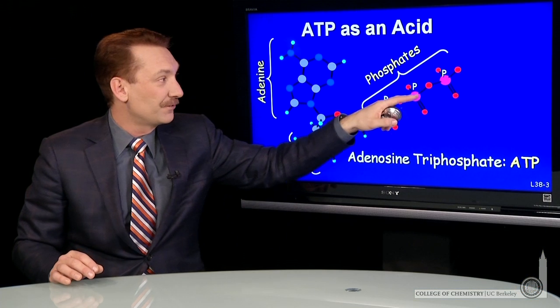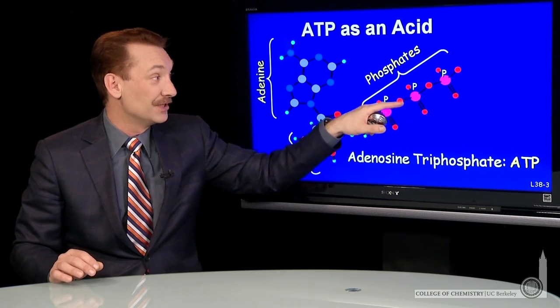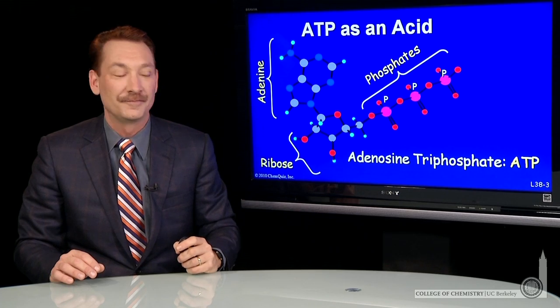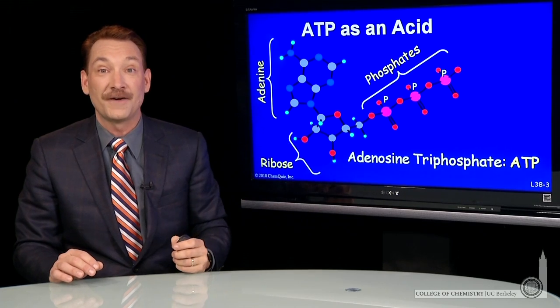Here I've got the phosphorus in purple. The oxygens are in red, carbons in gray, hydrogens in light blue. Adenosine triphosphate.